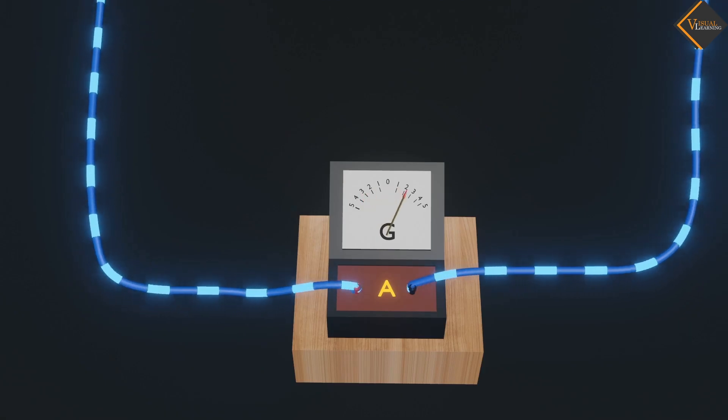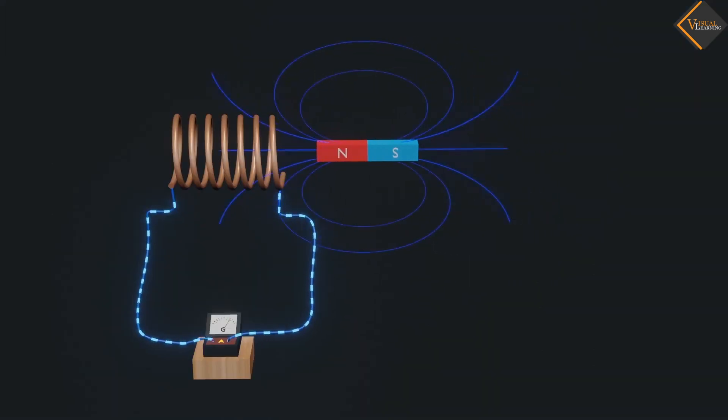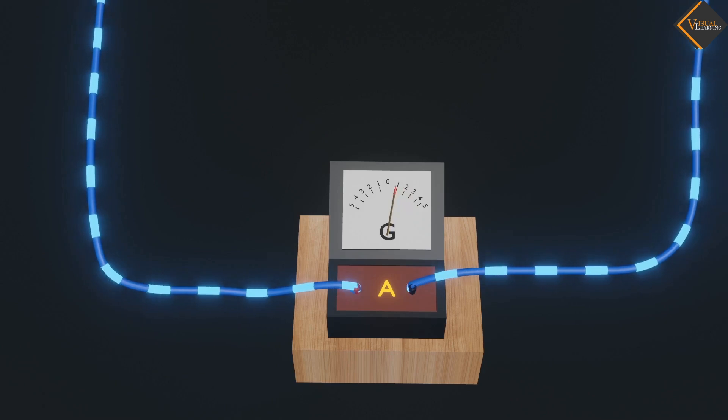This indicates the presence of a current in the coil. As soon as the bar magnet stops, the deflection becomes zero.